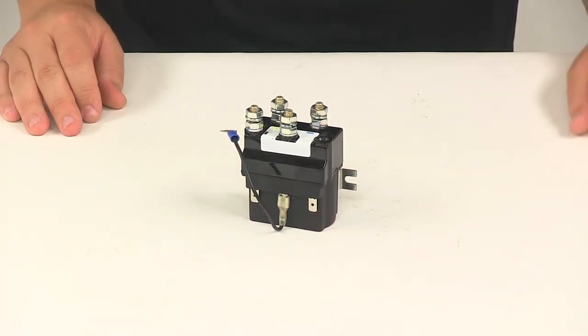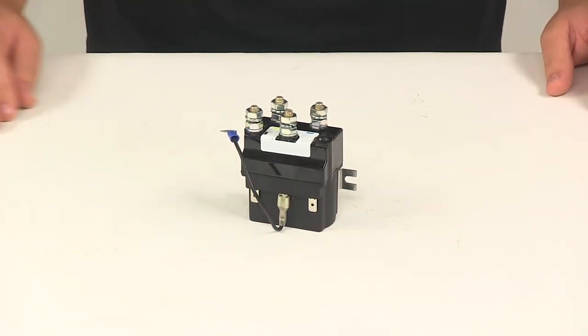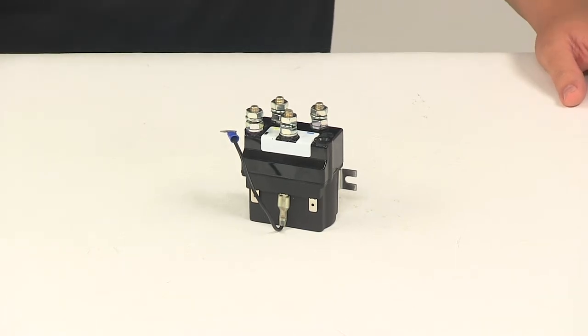That's going to do it for today's look at the Bulldog winch replacement OE contactor for trailer winches 15017 and 15019.